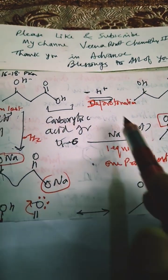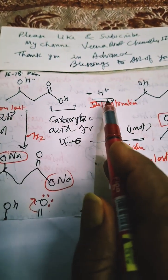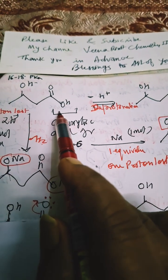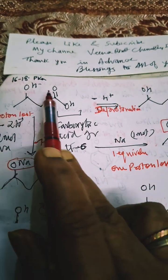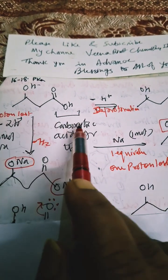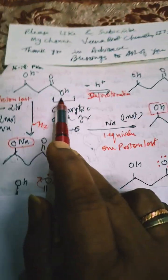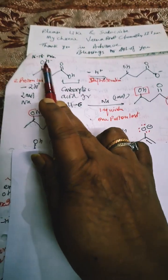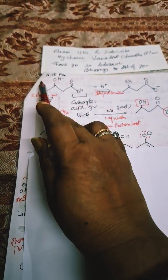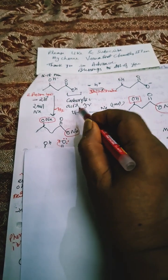If they give you one equivalent of sodium, deprotonation will occur. Which will lose proton readily? This carboxylic acid group, because it is more acidic than this alcoholic OH which has pKa value 16 to 18. Here it is having 4 to 6.